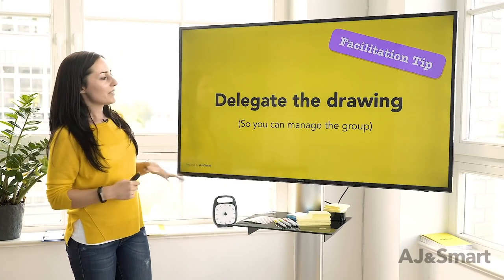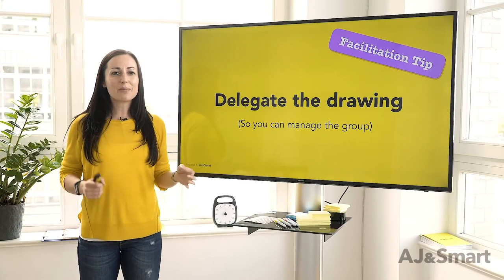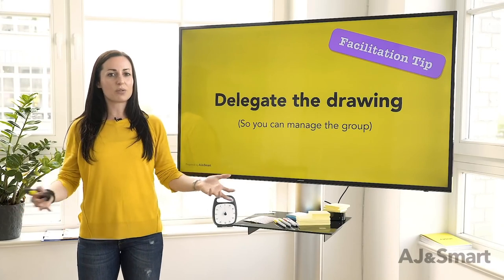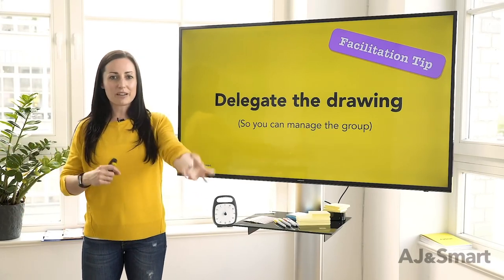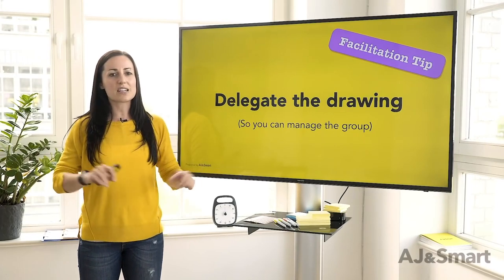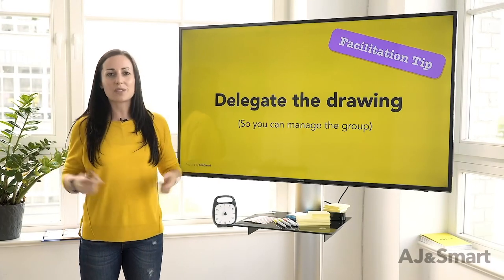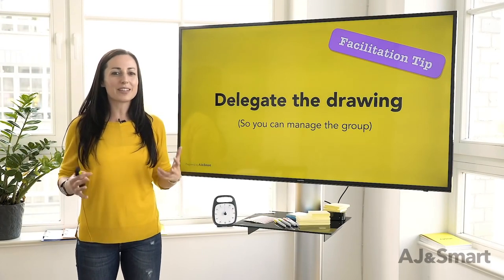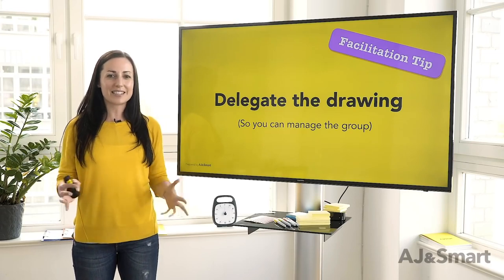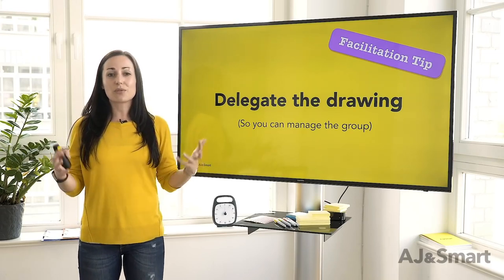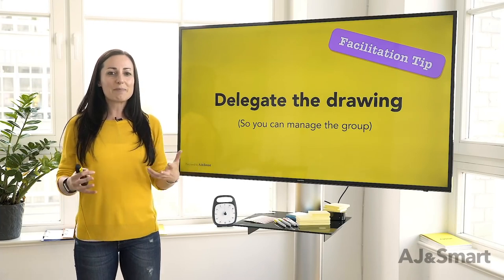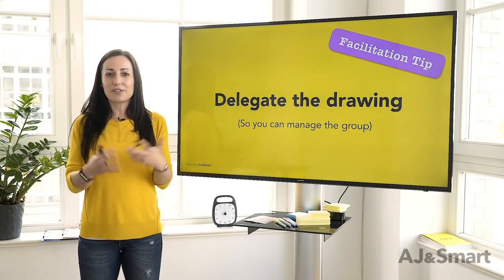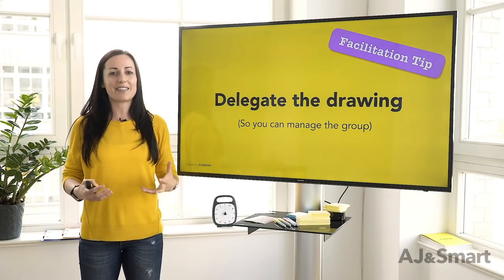Another great tip is delegating the drawing — find someone in the group who can do the actual drawing for you so that you can be facing the group, watching for people getting disengaged or having side debates so you can allocate them side tasks. It can be really tricky to keep the group engaged and active, and it's a really important thing to do for this very last exercise. Keeping people motivated, engaged, and invested in what they're doing is super important for you as a facilitator, and for the team to have that sense of achievement together at the end.